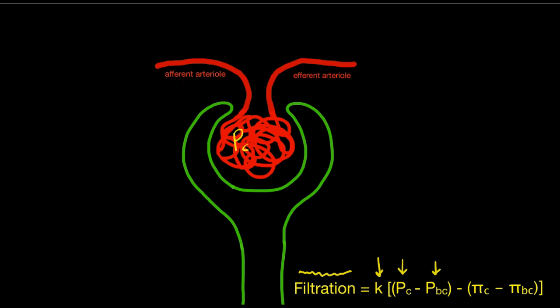PBC is the hydrostatic pressure in Bowman's capsule or Bowman's space. PiC is the oncotic pressure in the capillary loops, formed by plasma proteins, and it opposes the movement of fluid out of the vessel — because oncotic pressure draws water to it. Pi BC is the oncotic pressure of Bowman's space, but in Bowman's space there aren't proteins like there are in plasma. Assuming a normal glomerulus with no proteinuria or albuminuria, all plasma proteins are retained in the capillary space, so pi BC can essentially be ignored.